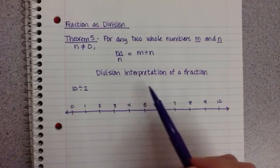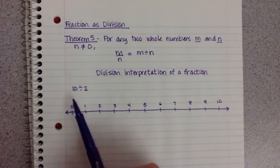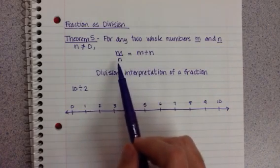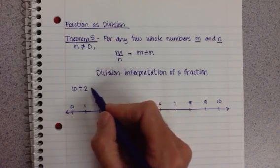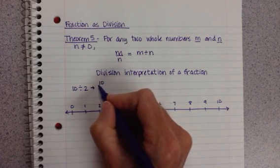This is called the division interpretation of a fraction, and we're going to do another example similar to what we did on the first video. But this time I'm going to start off with 10 divided by 2, so I'm kind of starting backwards, and we're going to go ahead and write this. If this is true, then this would be the same as saying 10 over 2.